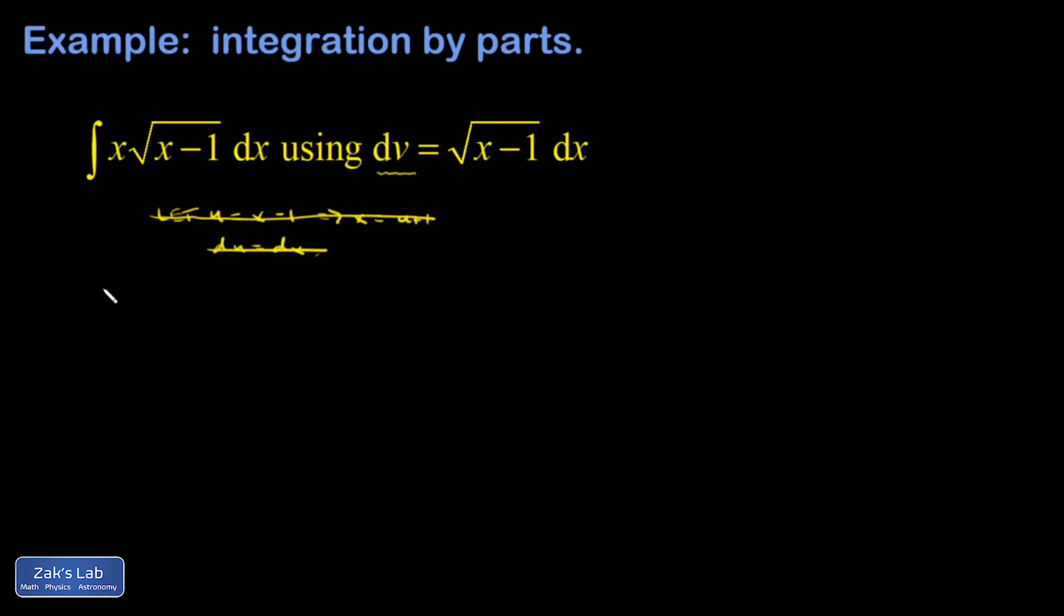So let's get into it. Let dv be x minus 1 to the 1/2. I just wanted to do that to make it easier to see the antiderivative. Then that means v is going to be the result I get from adding 1 to the exponent and dividing by that exponent. Dividing by 3/2 gives me a 2/3 out in front, and u is x.